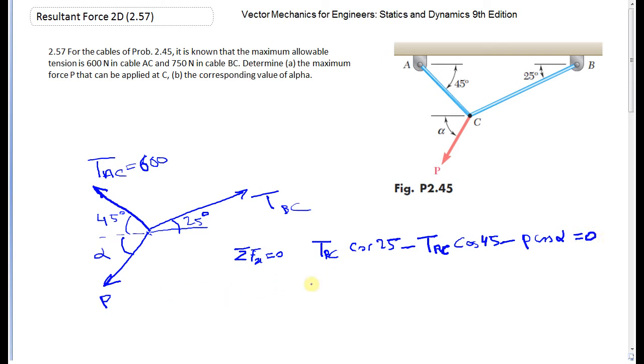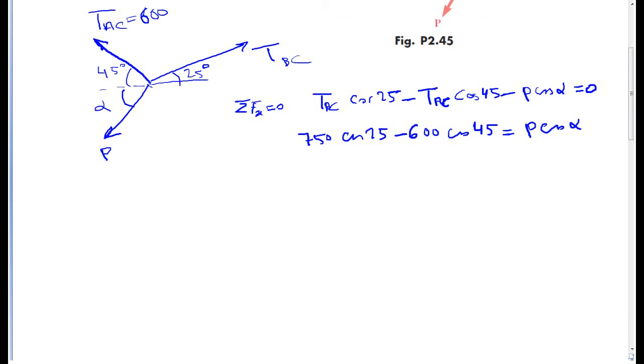I can rewrite this equation as TBC 750 cosine 25 negative 600 cosine 45 is equal to P cosine alpha. I call this equation equation number one.